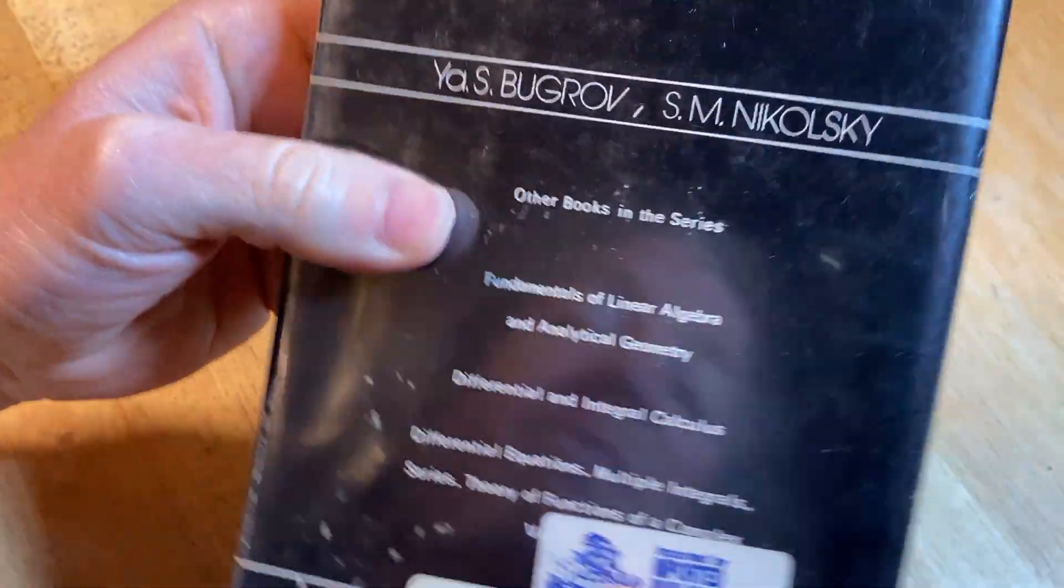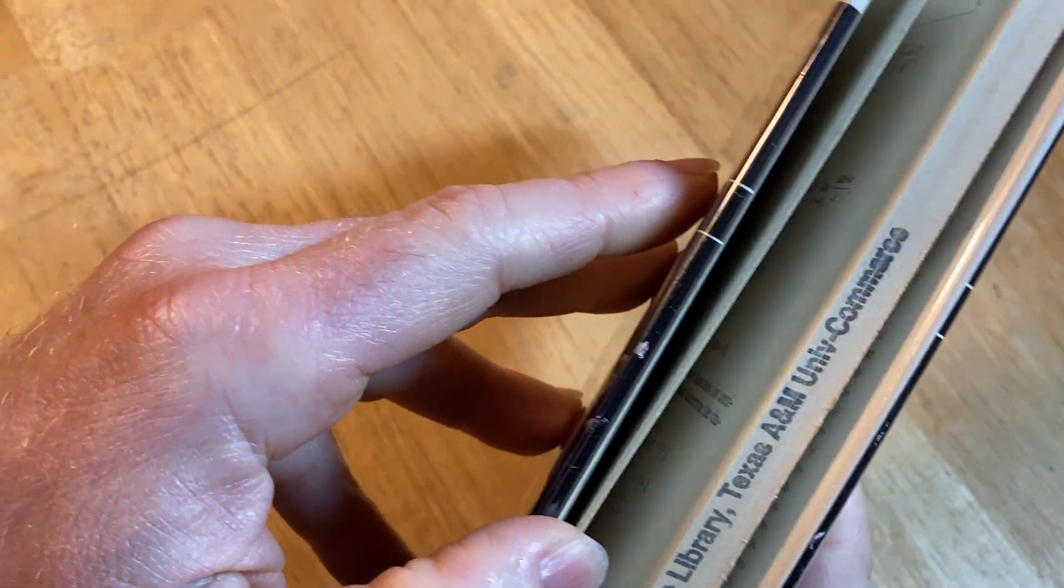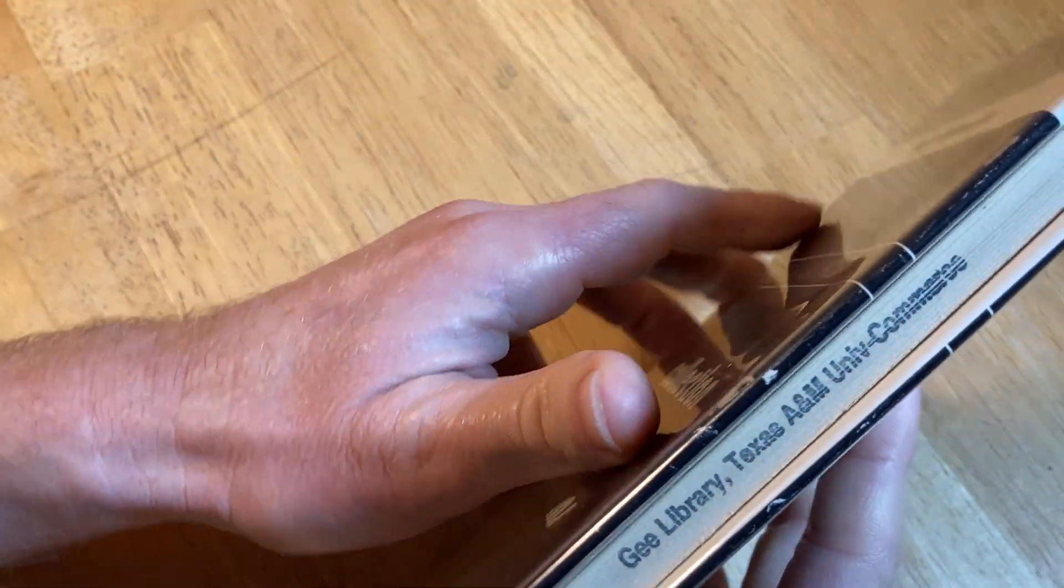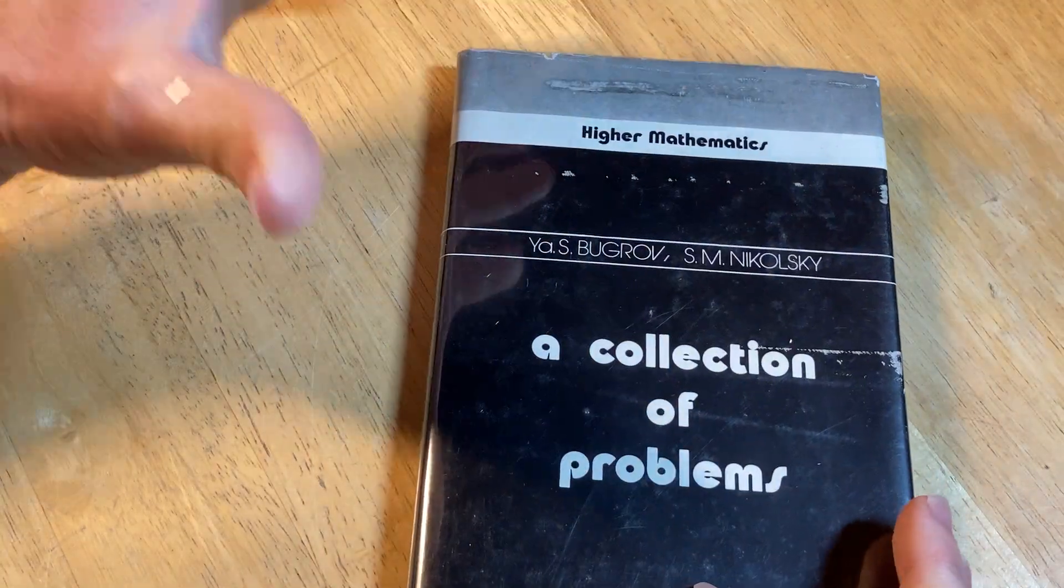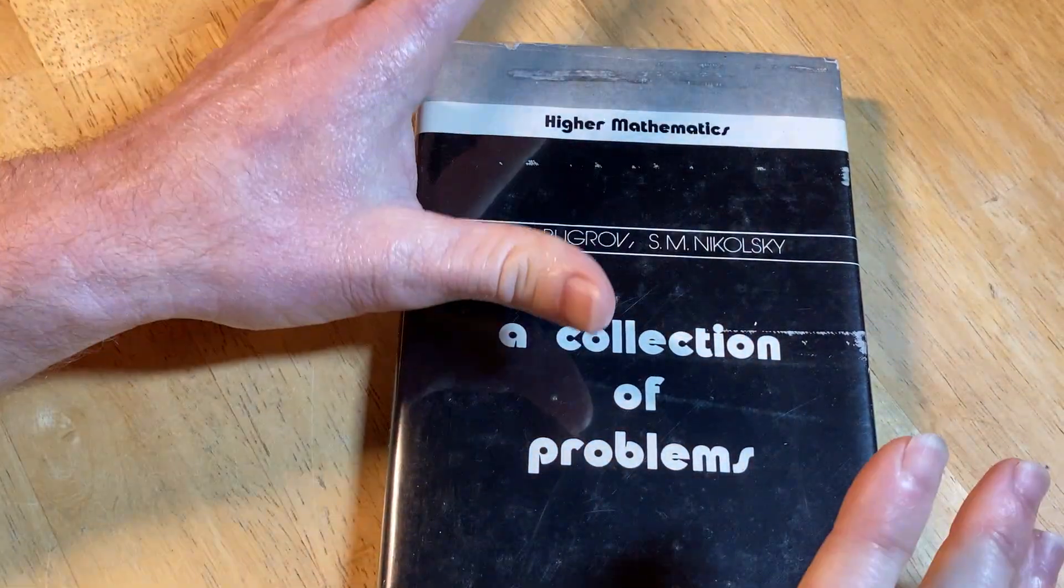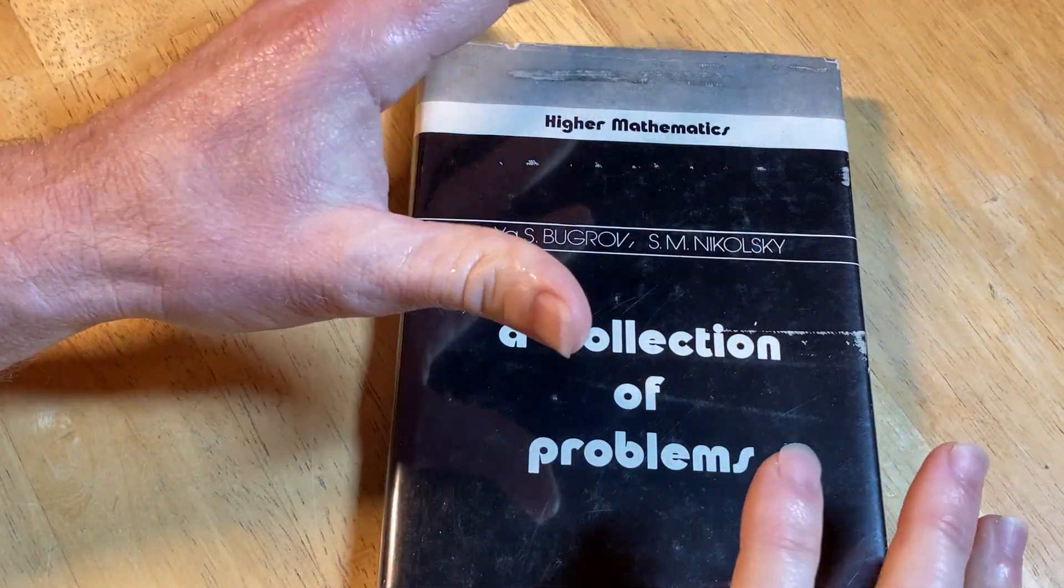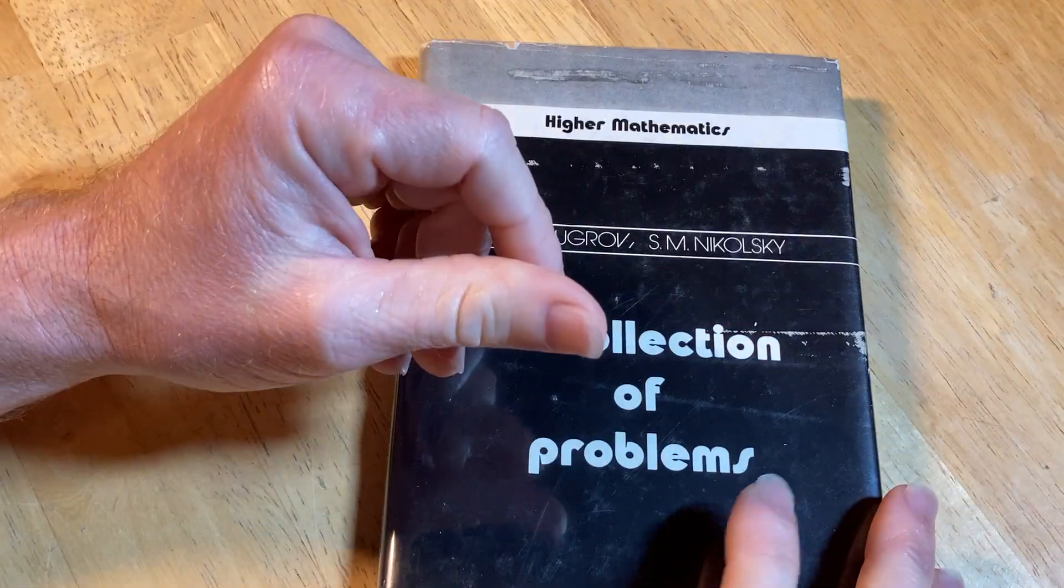So this book was published by Mir Publishers. They were a publishing company that would take books written in Russian and translate them to various languages. The books were used all over the world, especially in a lot of Latin American countries. So Spanish was one of those languages.